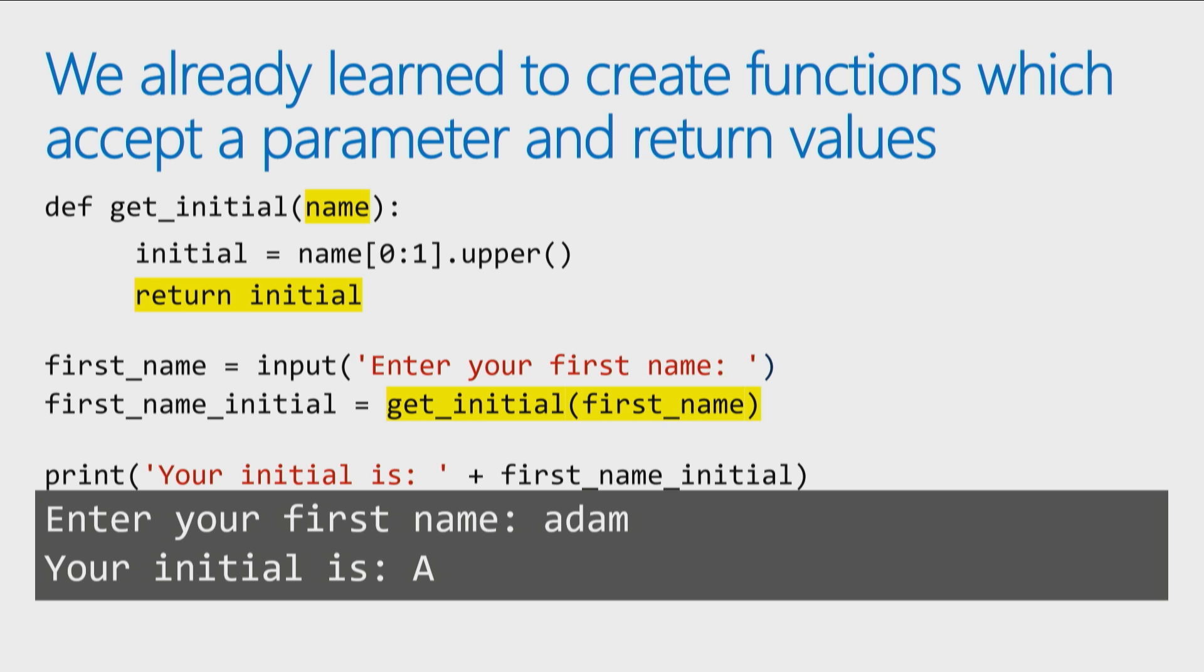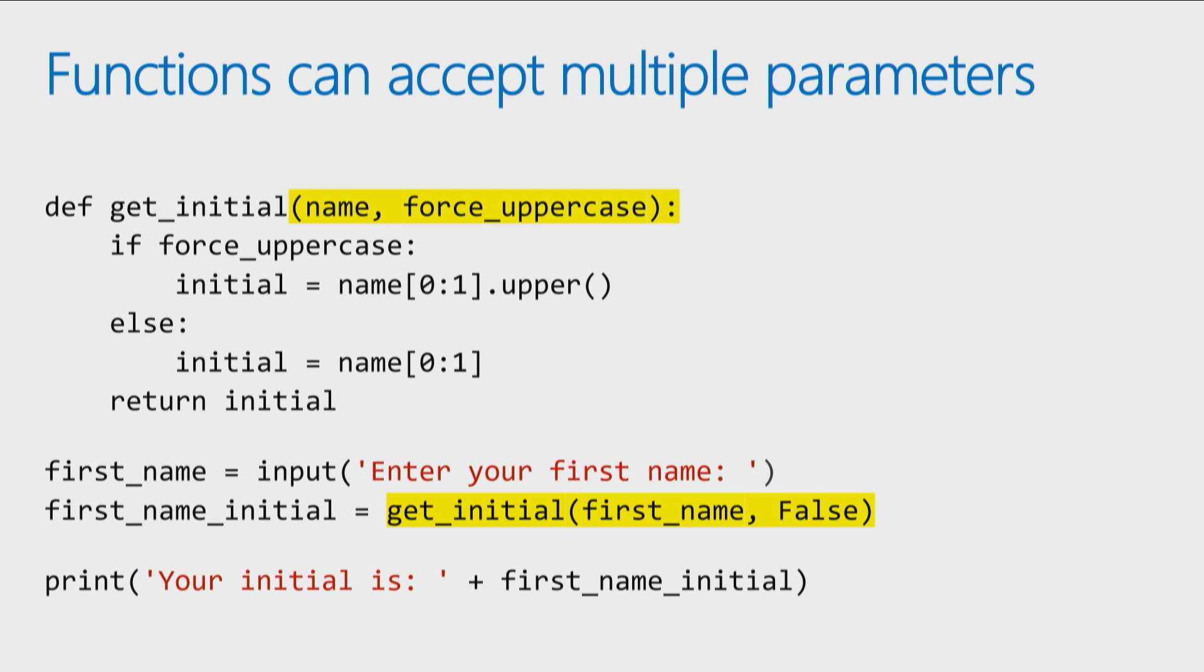Well, it's okay because I can actually pass multiple parameters to my function. So what I can do is I add a second parameter called forceUppercase. And when you call my function, you tell me whether you want false, don't force the initial to be uppercase, or true, do force the initial to be uppercase.